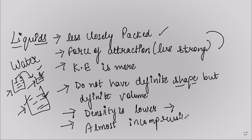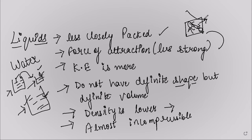To summarize the properties of liquids: the particles are less closely packed, so they have more spaces between them; the force of attraction is less strong; the kinetic energy is more — meaning they have enough space to move from one place to another. This is why they do not have a definite shape, but they do have a definite volume.